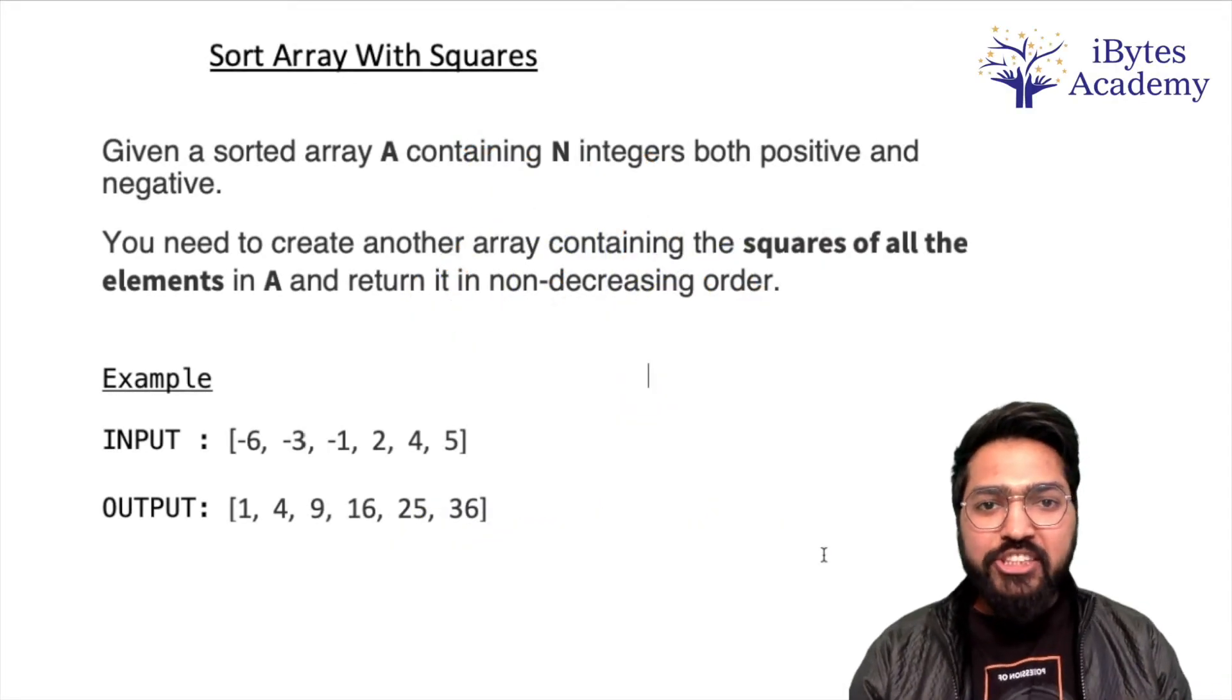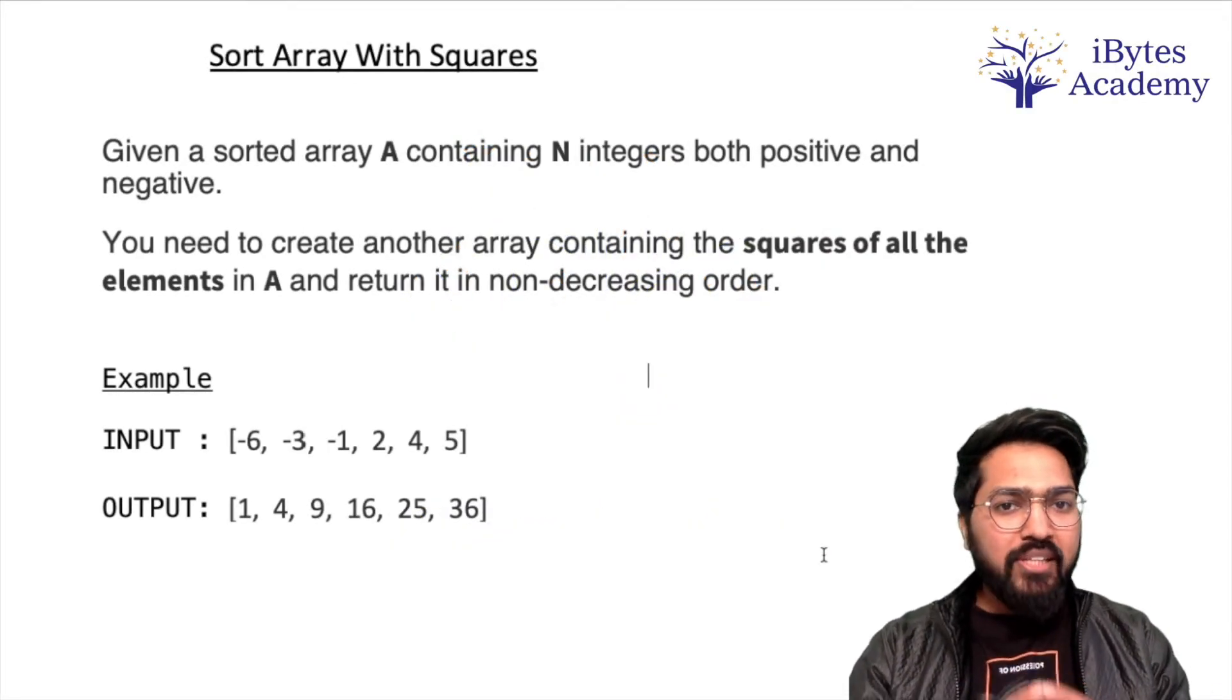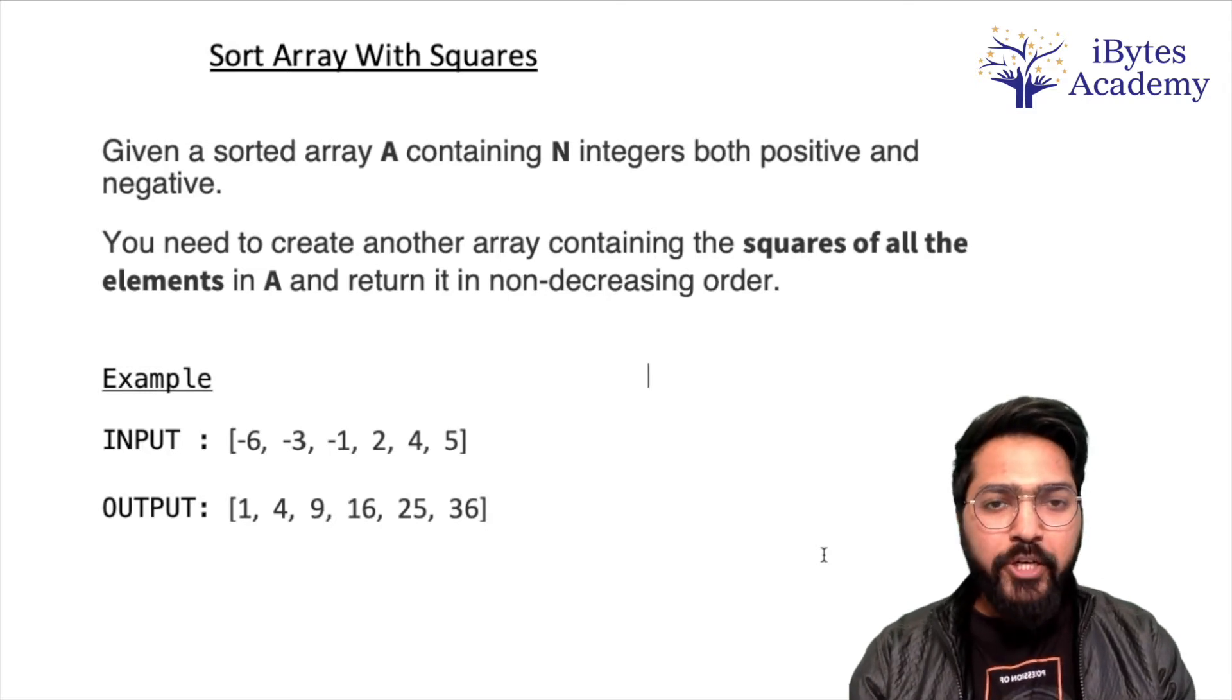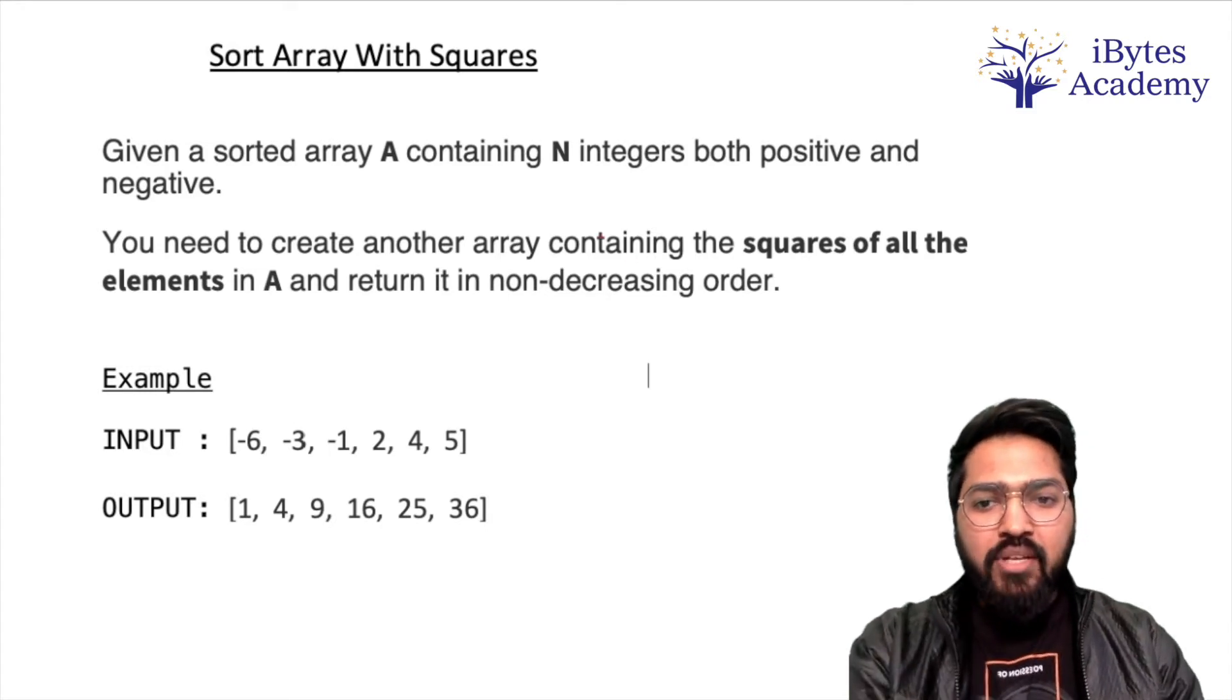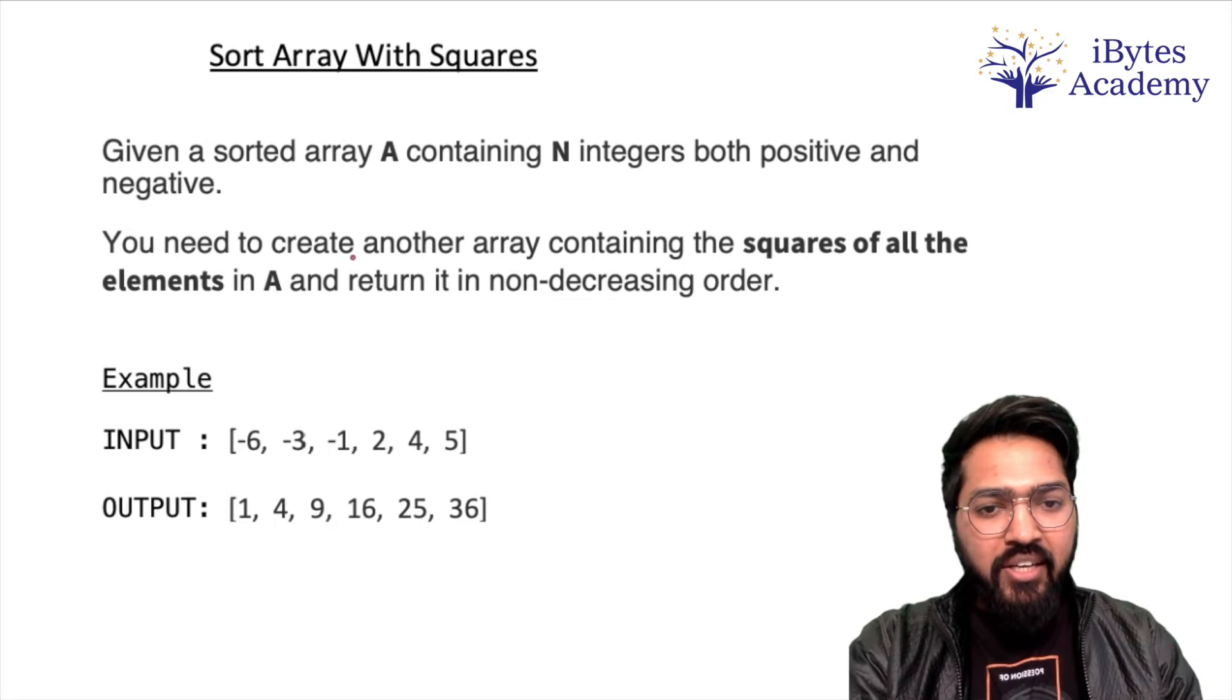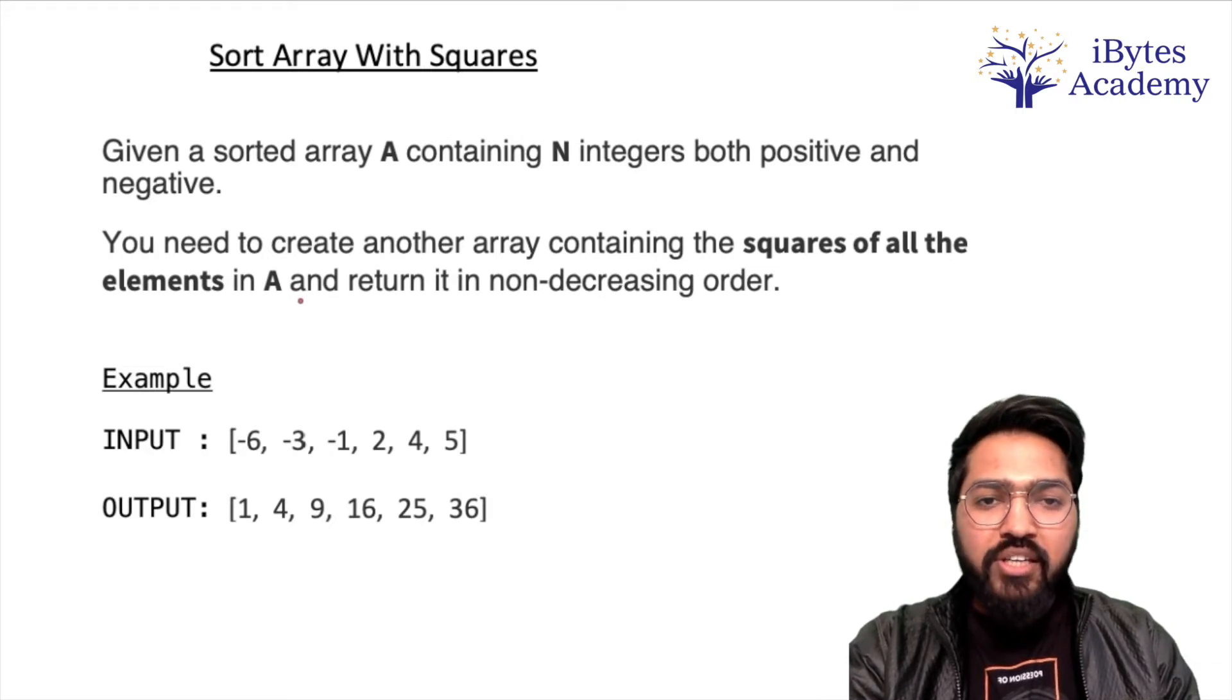Hi, so in today's coding session we are going to solve a problem that has been asked in a VMware coding interview. The problem is: given a sorted array A containing N integers both positive and negative, you need to create another array containing the squares of all the elements in A and return it in non-decreasing order.